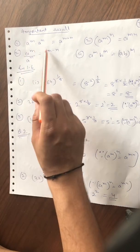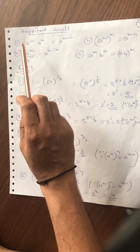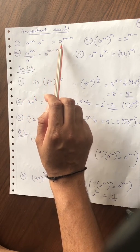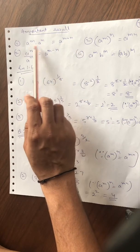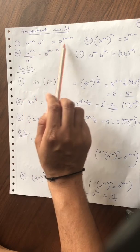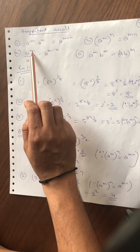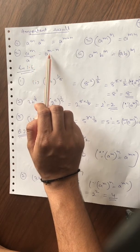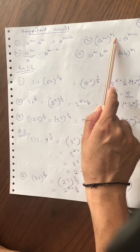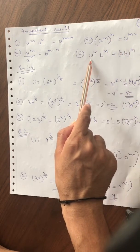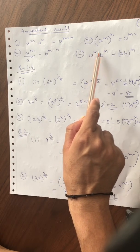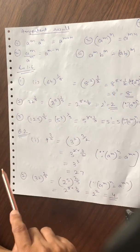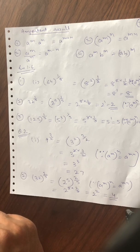Now see the next topic. There are some important results जो आपने 8th standard में exponents and powers में पढ़ा है। a^m × a^n = a^(m+n) — अगर base same है तो power add होता है। a^m ÷ a^n = a^(m−n) — power subtracted होता है। (a^m)^n = a^(mn)। और a^m × b^m = (ab)^m। अब 1.6 में इसके बहुत सारे sums देखेंगे।